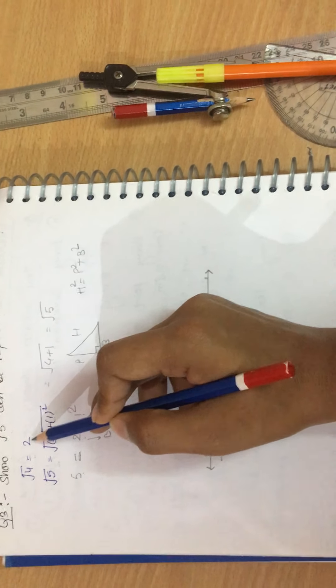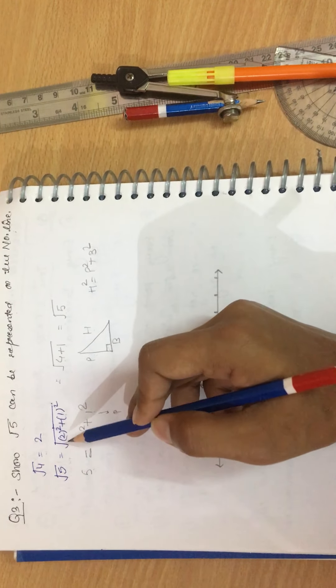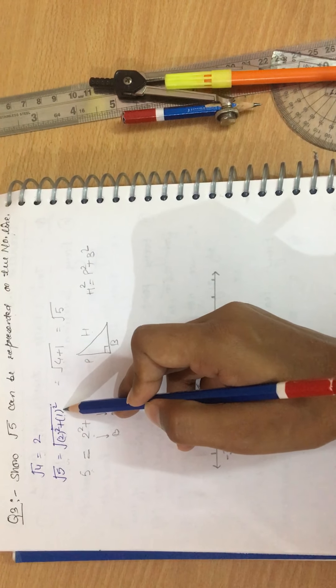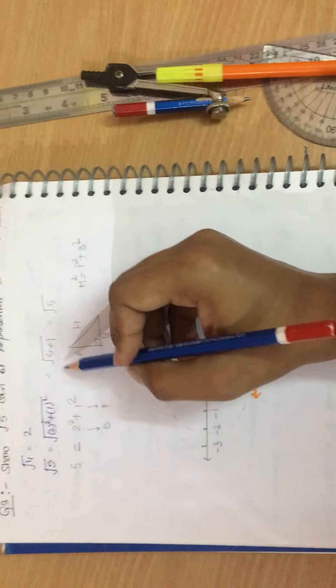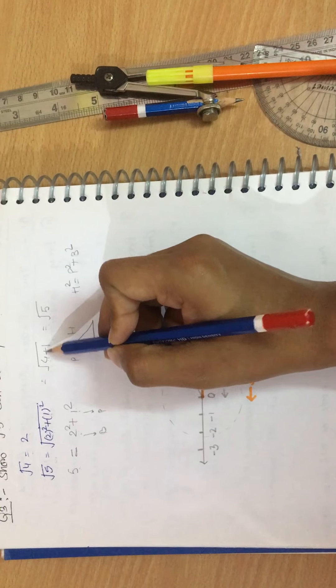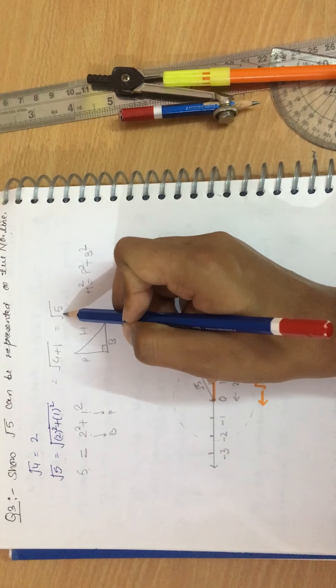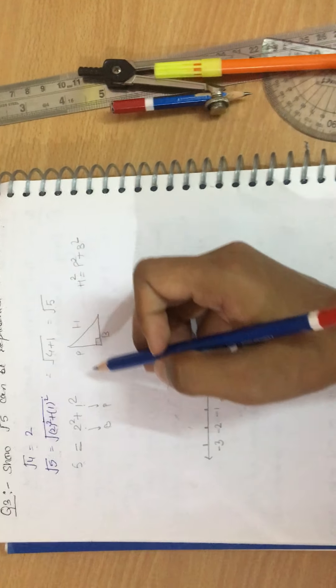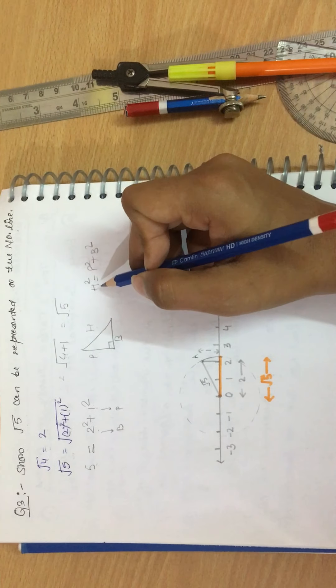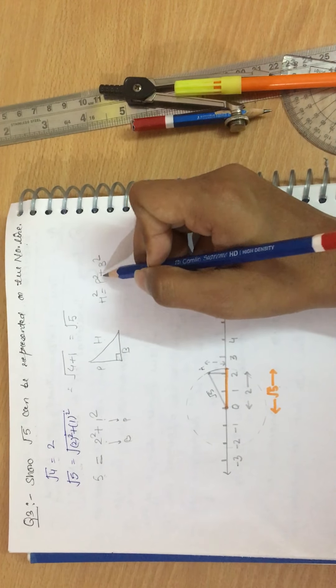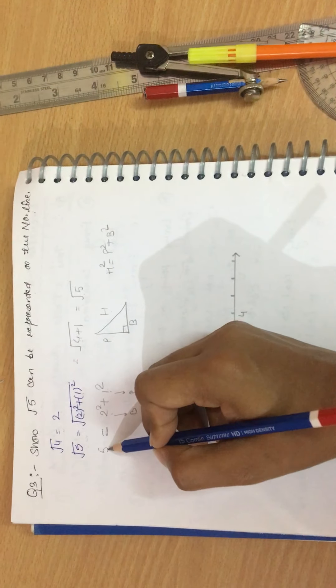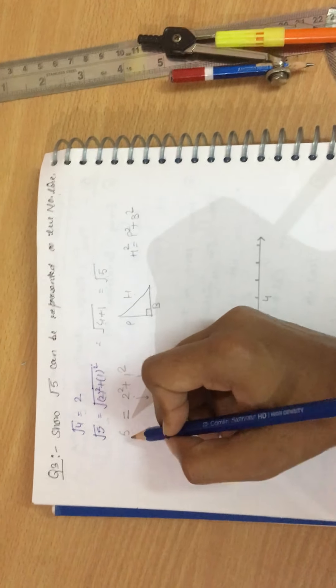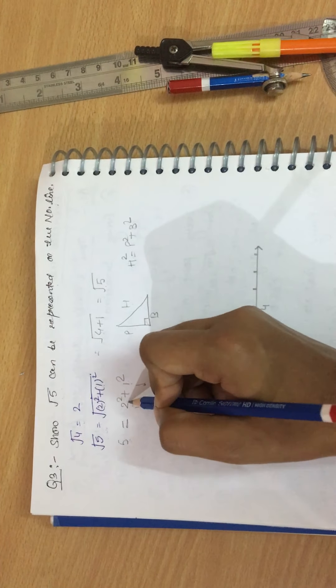Next question says show that under root 5 can be represented on the number line. So first under root 4 can be taken as 2. Under root 5 can be written as 2 square plus 1 square under the root, which gives 4 plus 1, that means under root 5.